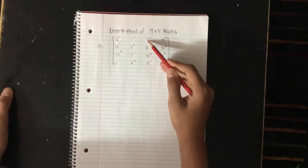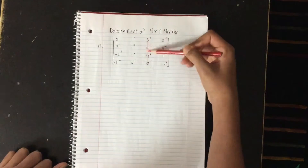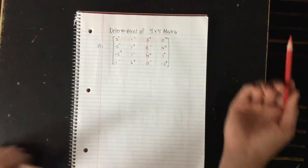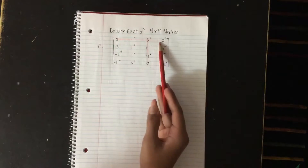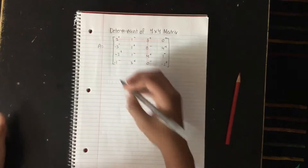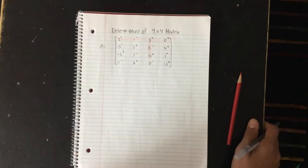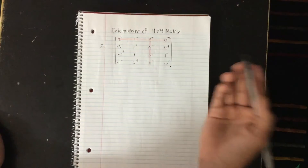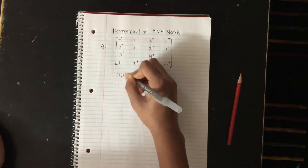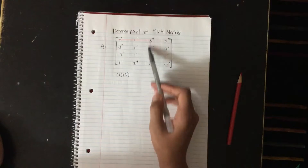We have our first number in this column and what you basically want to do is you want to cancel out the column it's in and the row it's in. So I crossed out the first row and then crossed out the column it's in. Next, what I want to write: this positive sign basically means you're multiplying a positive one or a negative one by it. So I'm going to be multiplying a positive one by three — it's going to be one times three — and then I'm going to multiply this by a matrix found in between the place that's not crossed out.